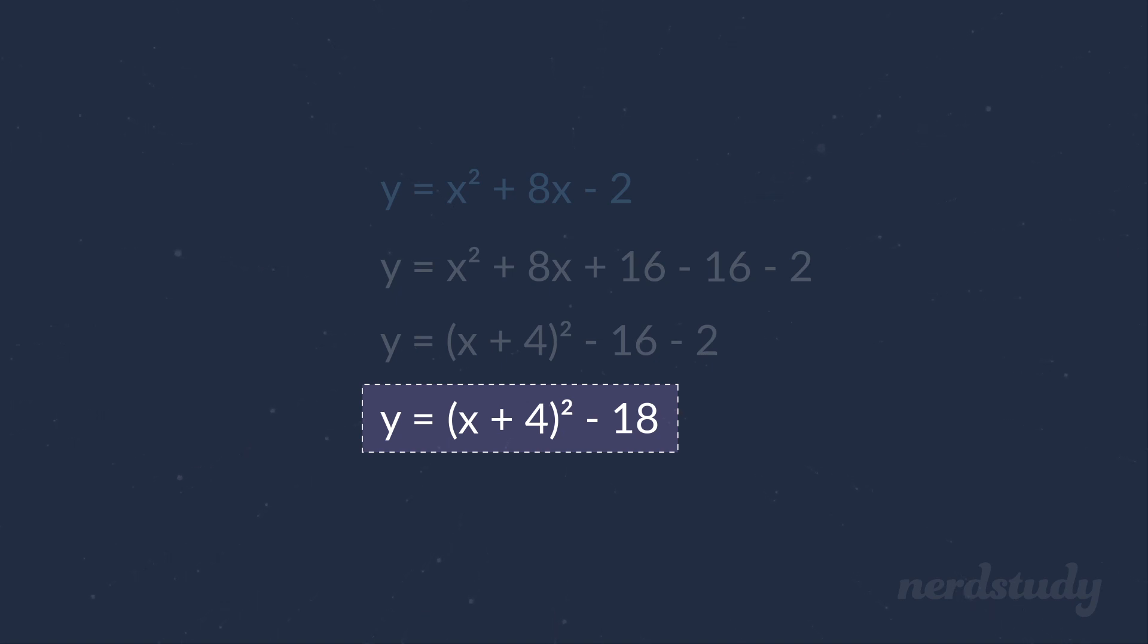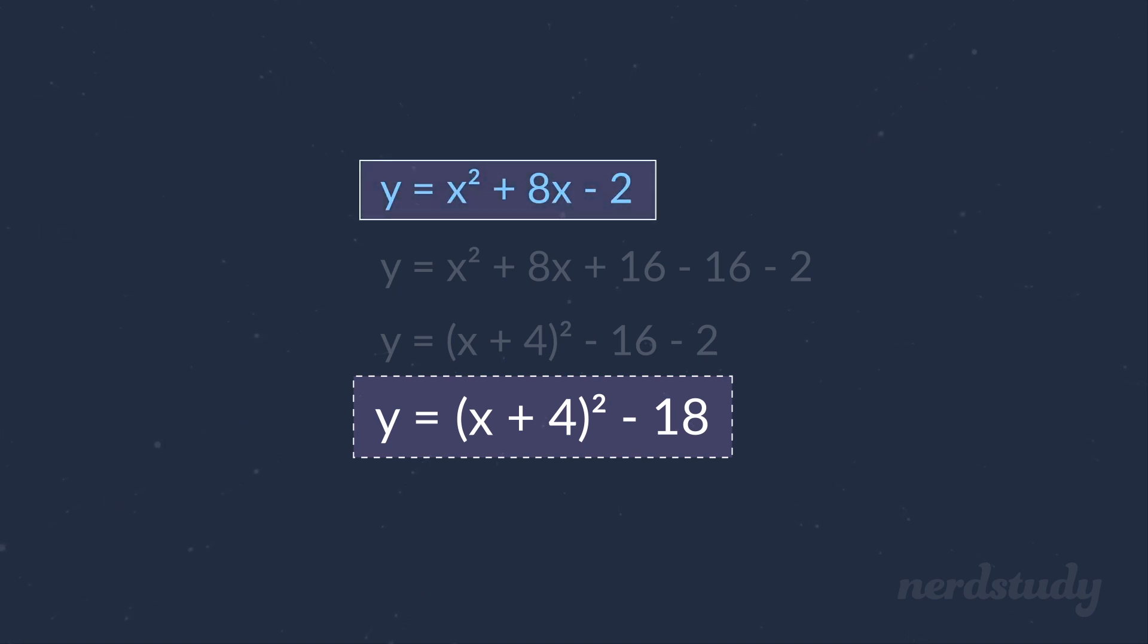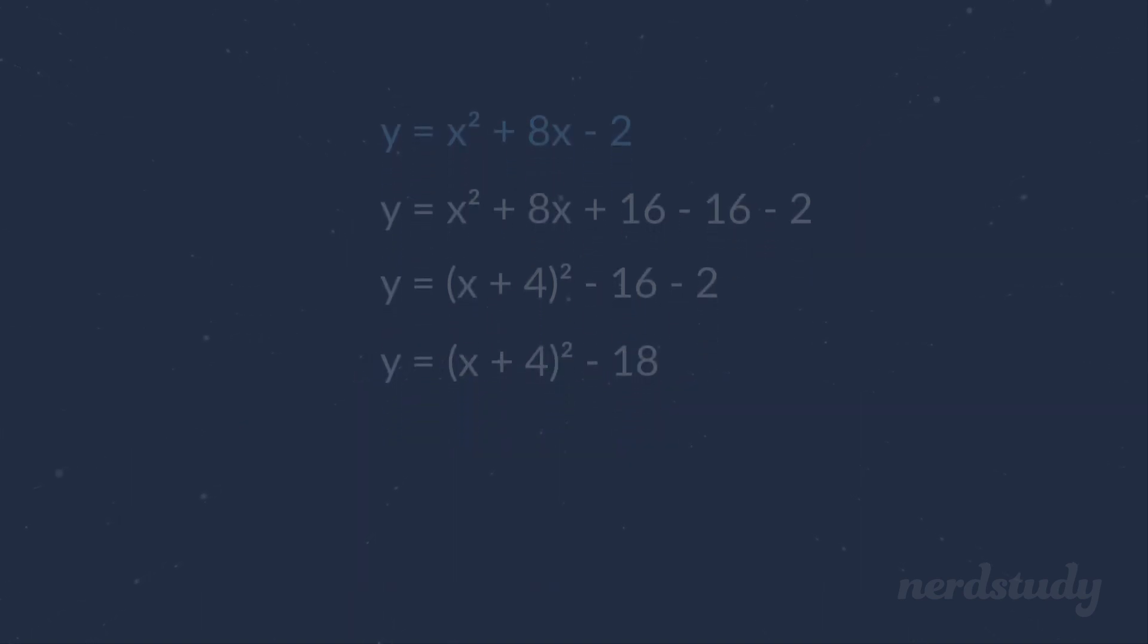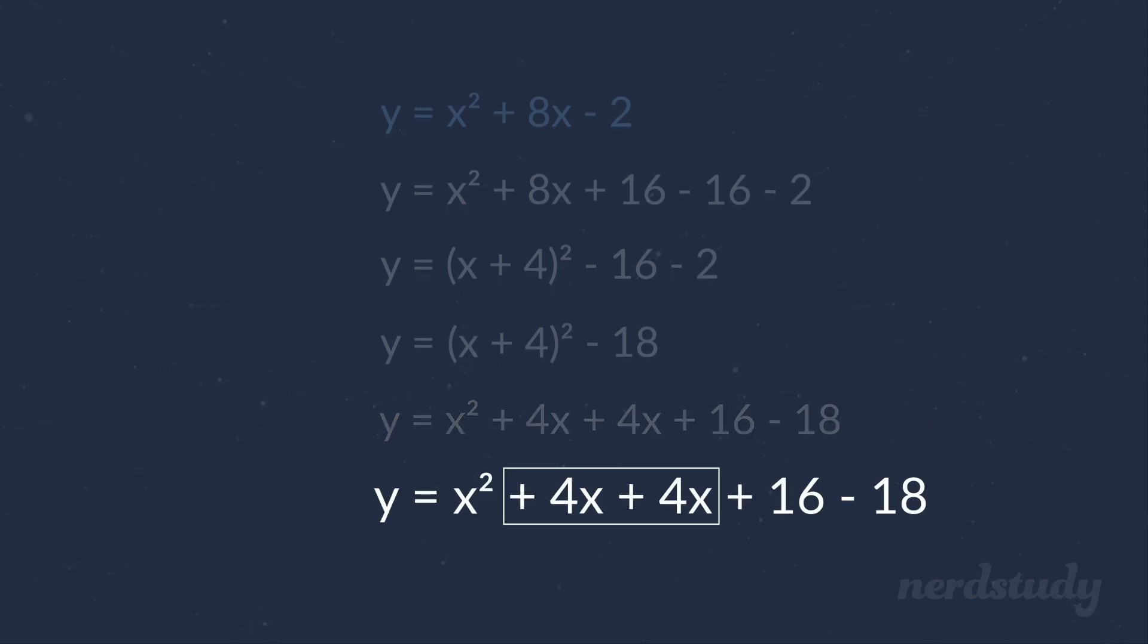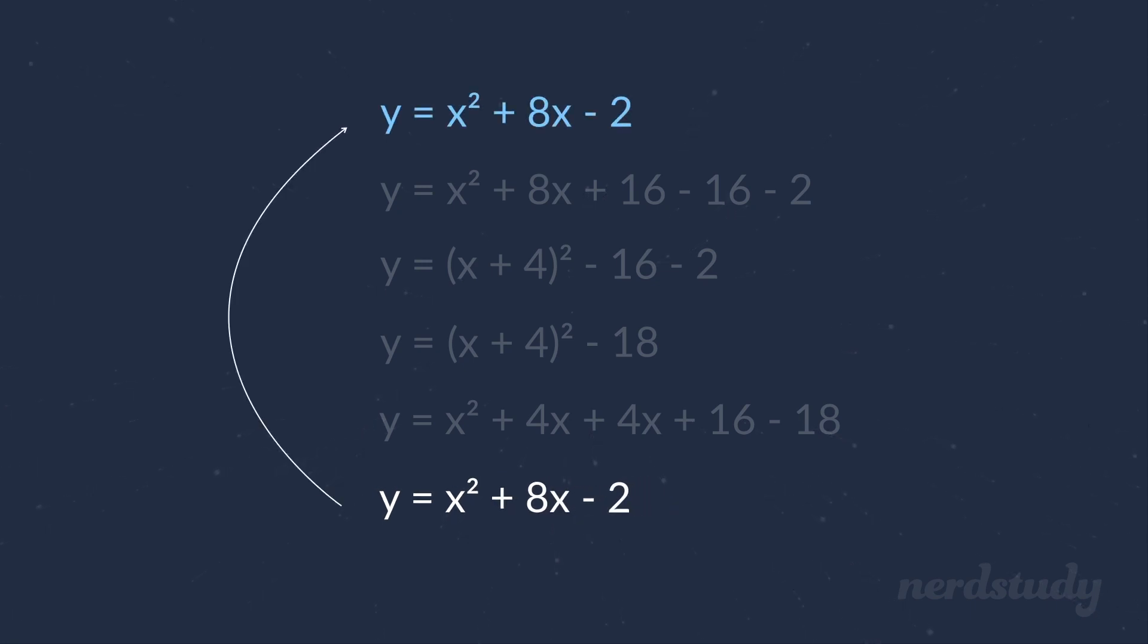If you ever wonder if this new equation is the same as our original one, all you'd have to do is expand and simplify. We'd get x² + 4x + 4x + 16 - 18. If we simplify this, we'd get x² + 8x - 2, which does confirm for us that we completed the squares properly and that the two equations are actually the same.